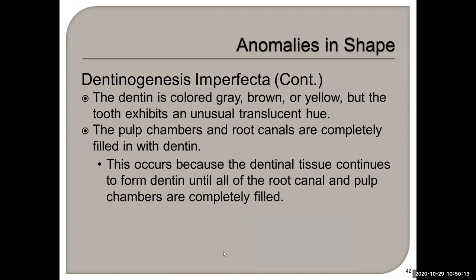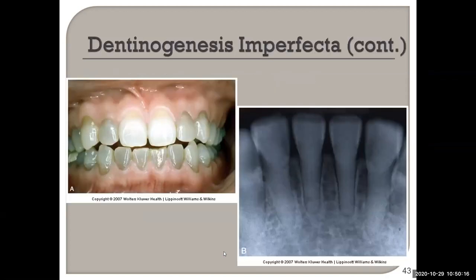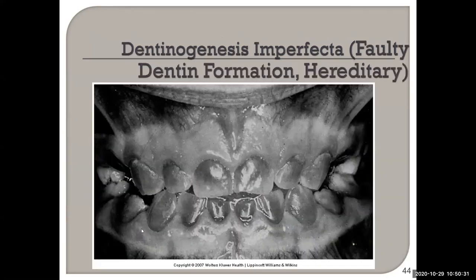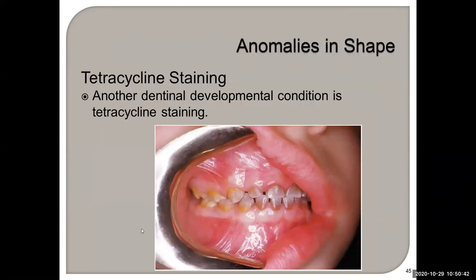With dentinogenesis imperfecta there is too much dentin. These teeth are also called opalescent teeth because of the bluish hue. Radiographically you can see there are no pulp chambers.